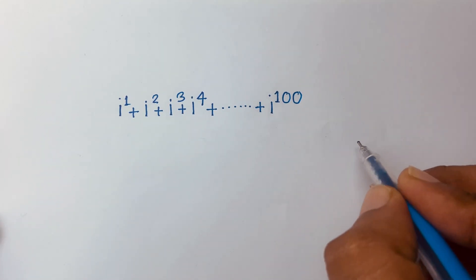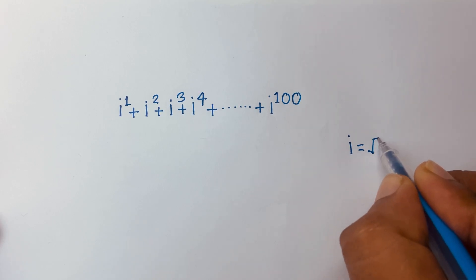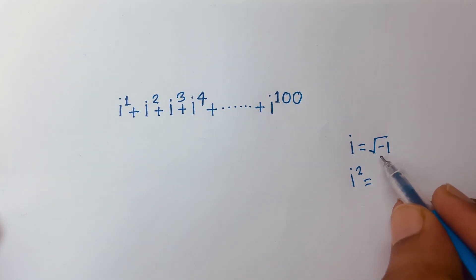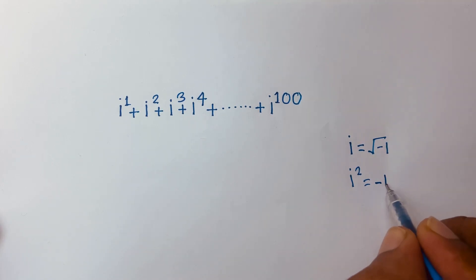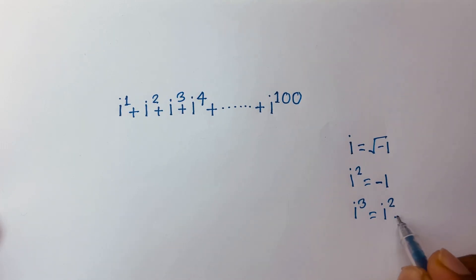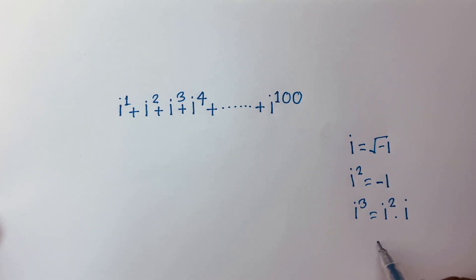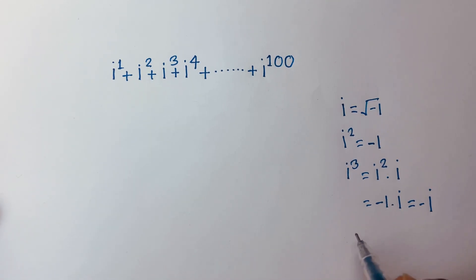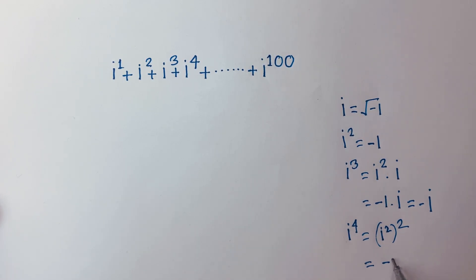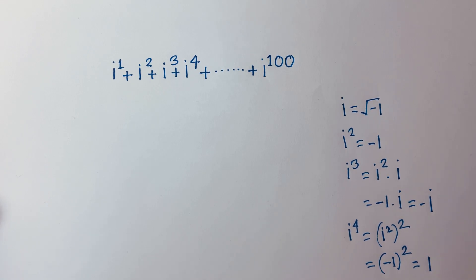First of all, we know that i is equal to the square root of minus one. And i squared will be square root of minus one, whole squared — the square root cancels and we get minus one. And i to the power 3 is i squared times i, which is minus one times i, giving minus i. And i to the power 4 is i squared to the power 2, which is minus one squared, equal to one.